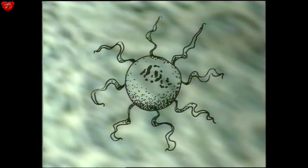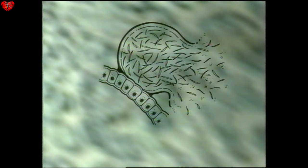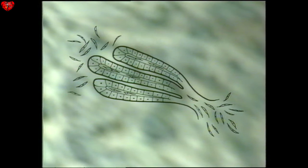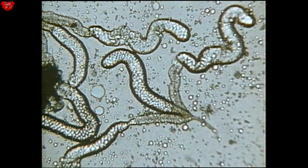To summarise the cycle: the gametocytes are ingested with the blood meal; the male ex-flagellates; fertilisation takes place; the ookinetes form oocysts on the stomach wall; and sporozoites leave the oocysts and migrate to the salivary glands. To show that a mosquito is infected with malaria, it's necessary to find oocysts on its stomach wall or sporozoites in its salivary glands.